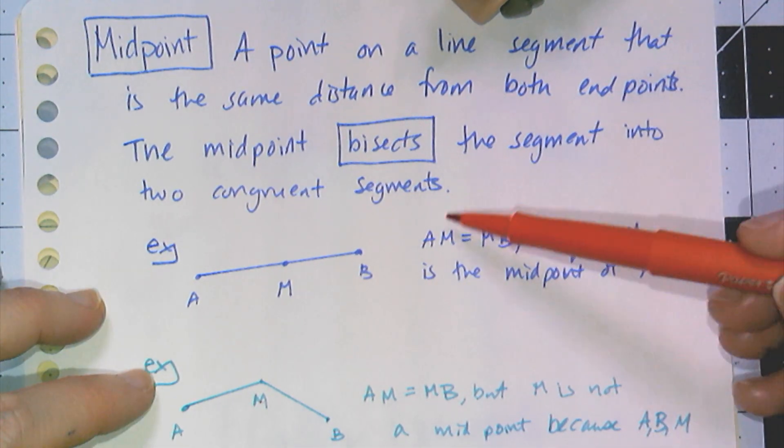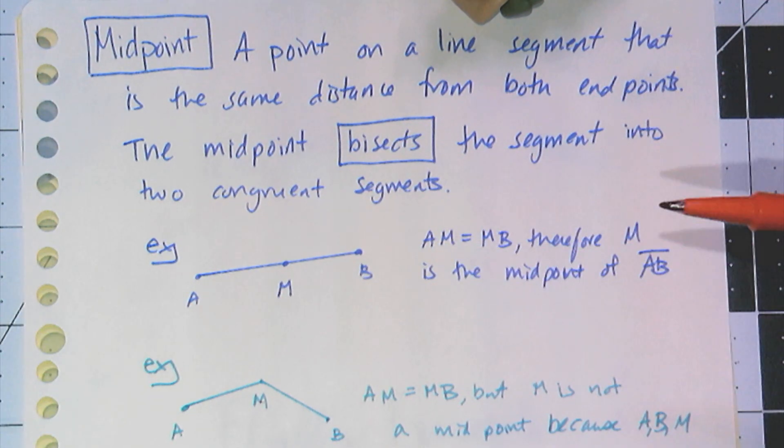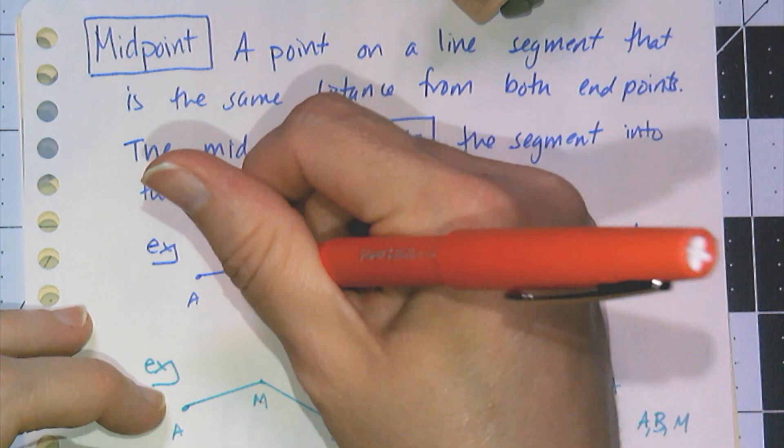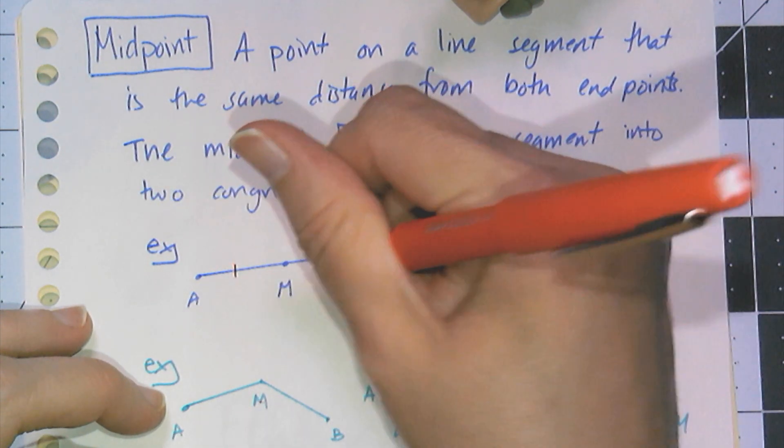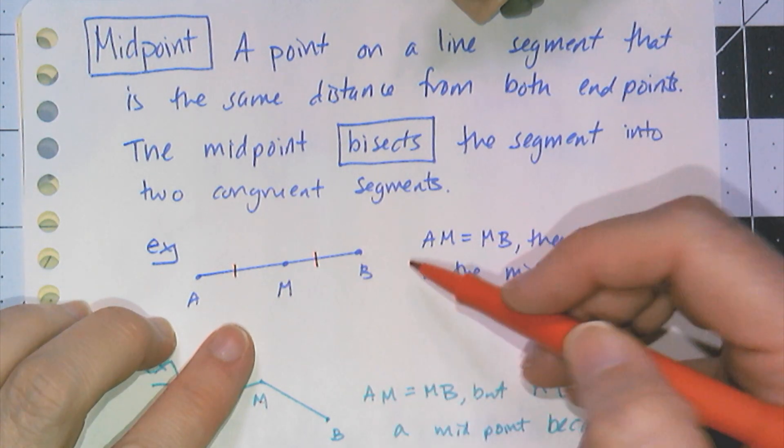I don't always write out the equality or congruence. Sometimes I will mark the figure. If I want to mark line segments as congruent, I use tick marks. If I draw one tick mark there and one tick mark there, that tells you AM is equal to MB. It's even shorter notation than writing out an equality or congruent statement.